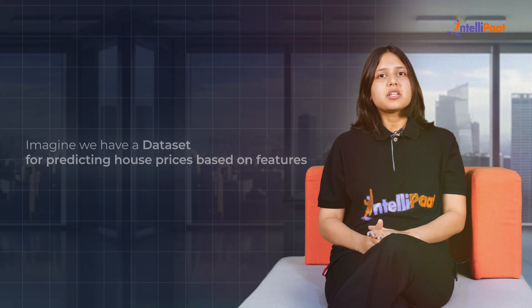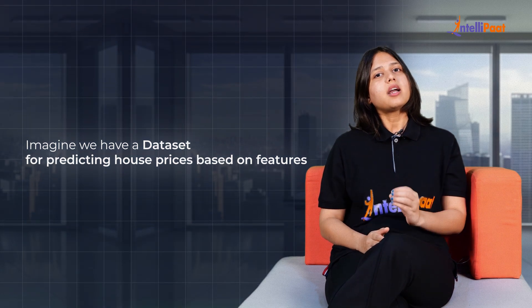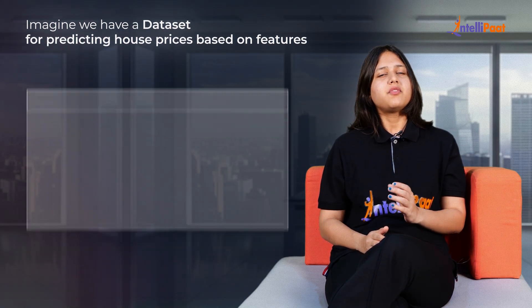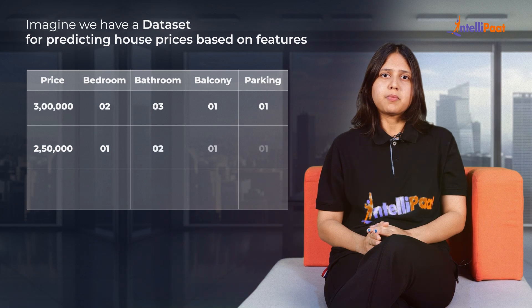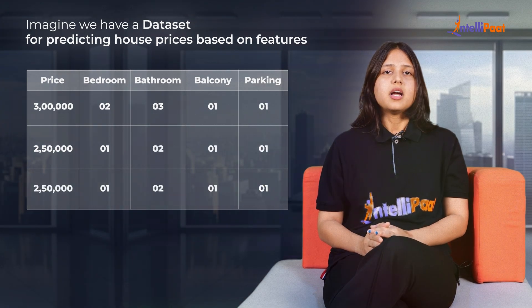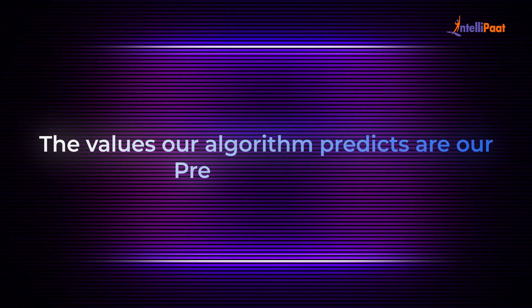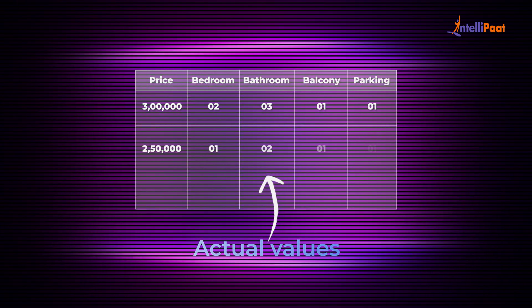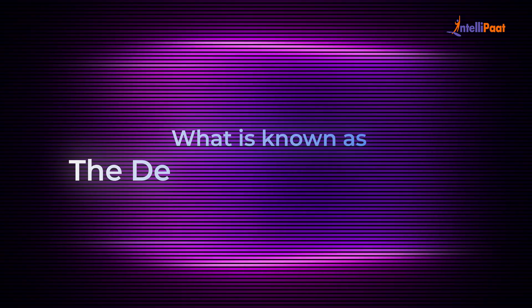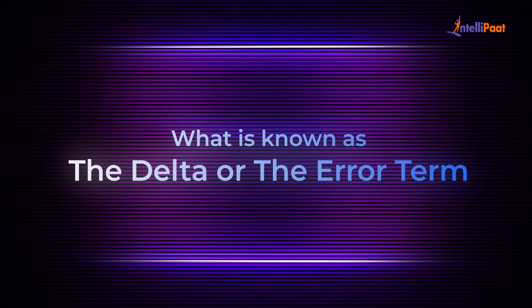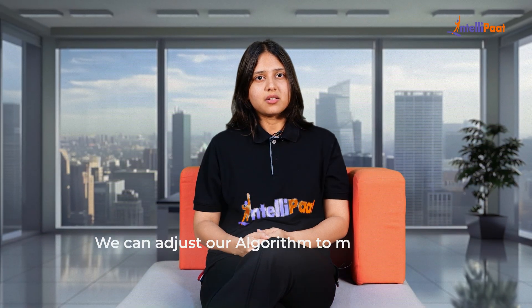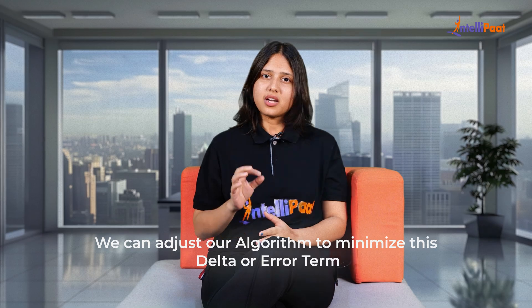Let's look at an example. Imagine we have a dataset for predicting house prices based on features like bedrooms, balconies, bathrooms, and other values. The values already present in the dataset are our actual values. The difference between these two values is what is known as the delta or the error term. By using gradient descent, we can adjust our algorithm to minimize this delta or error term, ultimately improving our model's accuracy.